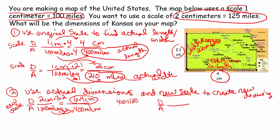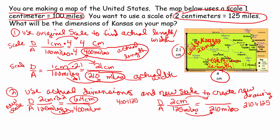I'll do the same for the width. Drawing over actual — new scale: 2 centimeters is 125 miles. The actual width of Kansas was 210 miles. Off to the side, I do 210 divided by 125, which is 1.68. So I multiply the numerator and denominator by 1.68: 2 times 1.68 is 3.36 centimeters. Our new drawing is actually larger than our original — the original was 4 by 2.1, and our new drawing is 6.4 by 3.36 centimeters. We've blown it up just a little bit.